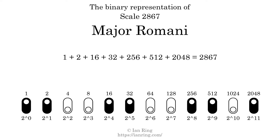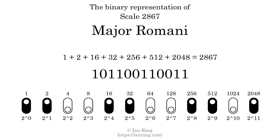That is why the scale number, in decimal, is 2867. The scale number not only enumerates the scale with a unique index, but it also literally describes the tonal content of the scale. Represented as a binary number in base 2, the scale number is 1, 0, 1, 1, 0, 0, 1, 1, 0, 1, 0, 1, 1.